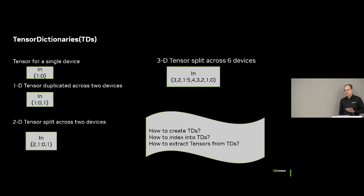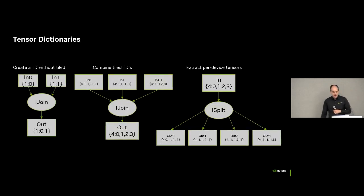But how do you create a tensor dictionary? How do you index into them, and how do you extract tensors from that tensor dictionary? Earlier they talked about not wanting to add lots of ops. And so one of the approaches for this, or one of the benefits of this, is we only add two new ops, an instance join and an instance split.